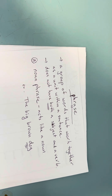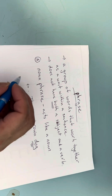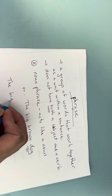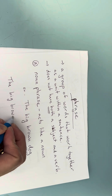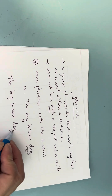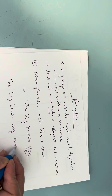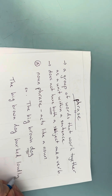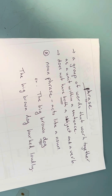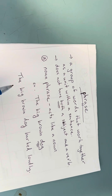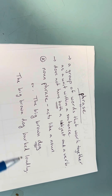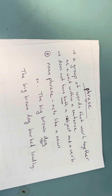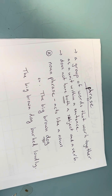So the noun phrase is 'the big brown dog.' To complete the sentence: 'The big brown dog barked loudly.' Once again, we have our noun phrase — 'the big brown dog' — and then we add in the rest of the sentence, or the predicate: 'barked loudly.' So that's our noun phrase.